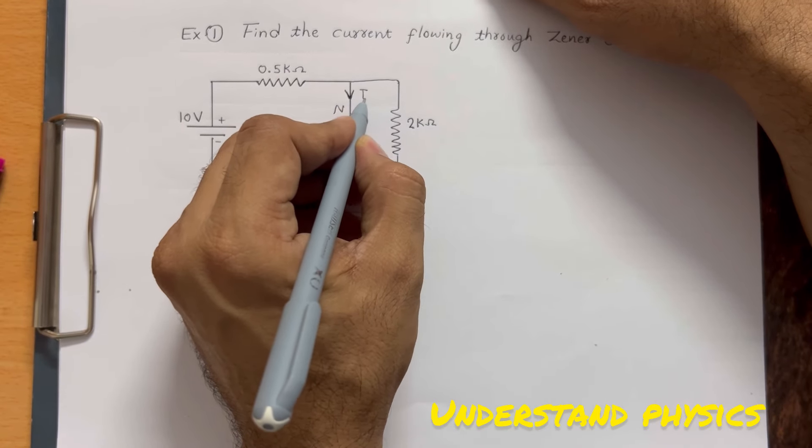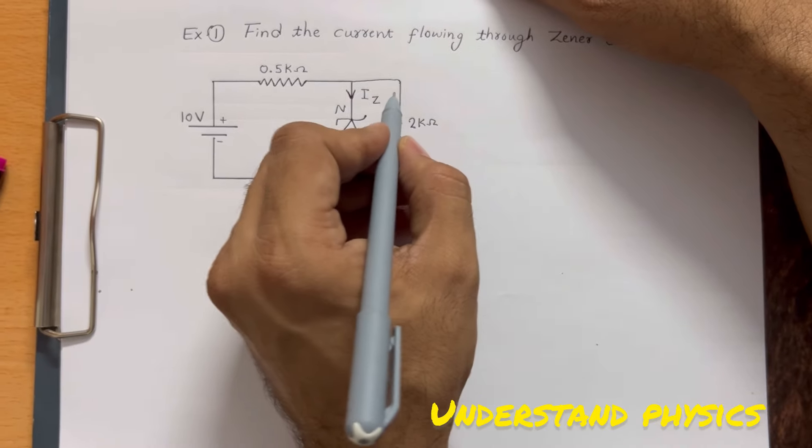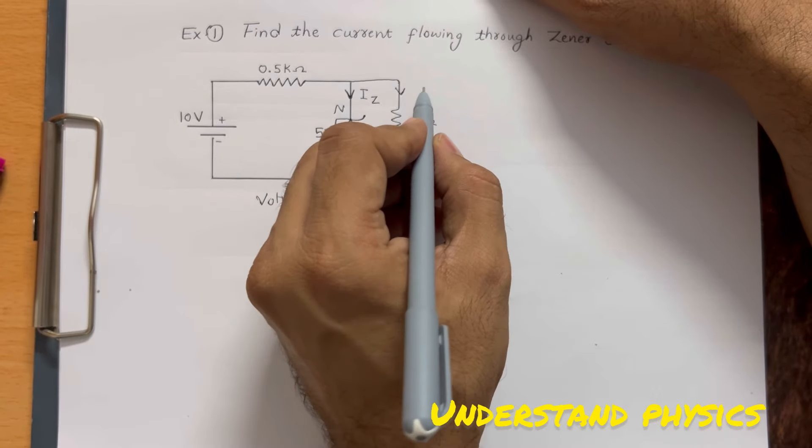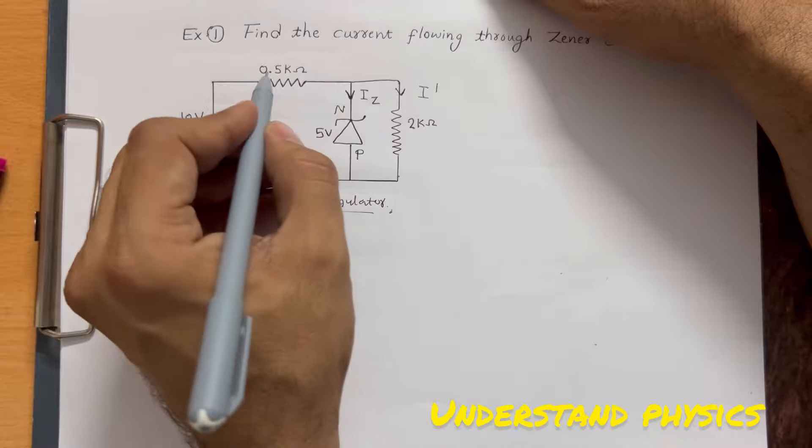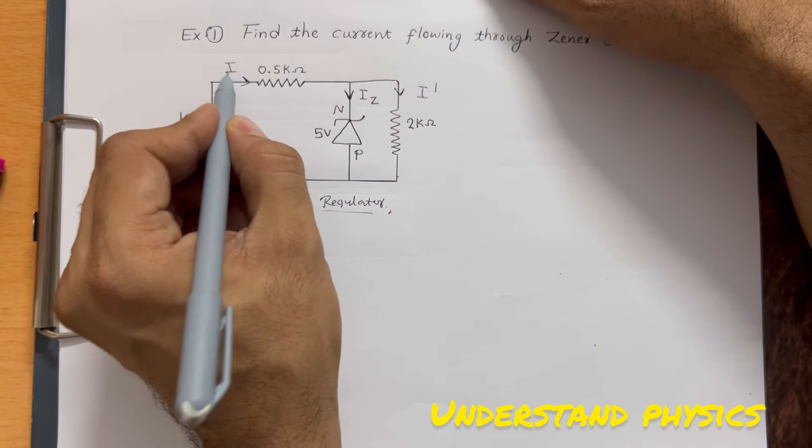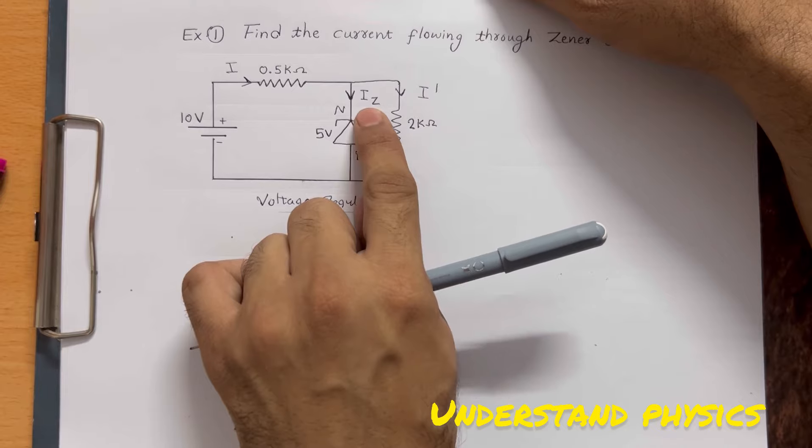During the breakdown region, current goes through the Zener. Let's say it is I_z. The current here, let's say is I'. The current here, let's say is I. So we have to find I_z.